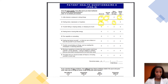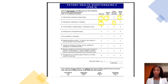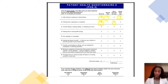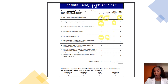Number five asks about poor appetite or overeating. When people are overwhelmed, stressed, or depressed, some may not eat as much — a poor appetite — or they may overeat. It could go either way. The responses are based on not at all for zero, several days over a one to two week period, more than half the days, or nearly every day.